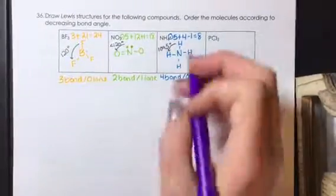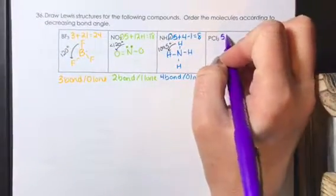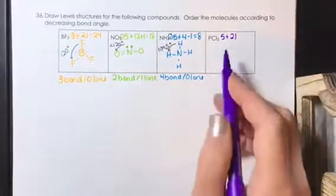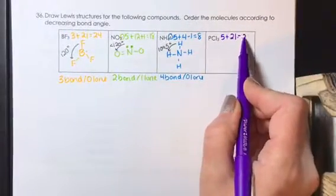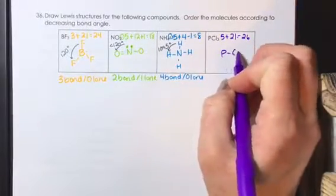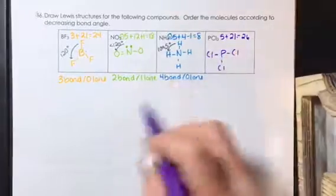The final molecule, PCl3, phosphorus has five valence electrons, and each chlorine brings seven for a total of 26. Phosphorus is in the center, and then we have our three chlorines attached.